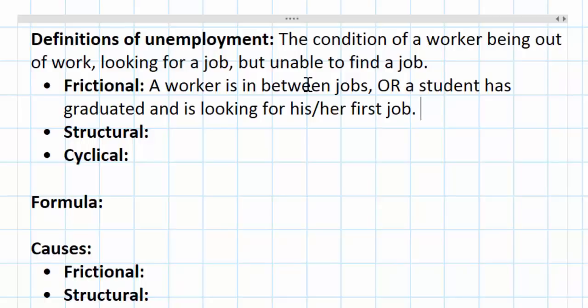Every economy will be experiencing some degree of frictional unemployment at all times. It's also a sign that an economy is perhaps even healthy. Having frictional unemployment indicates that workers are confident enough to leave a job and look for a new job. It also indicates that students are graduating from universities or schools and looking for their first jobs. So frictional unemployment is going to be included in what we call the natural rate of unemployment, which we will talk about a little bit later.